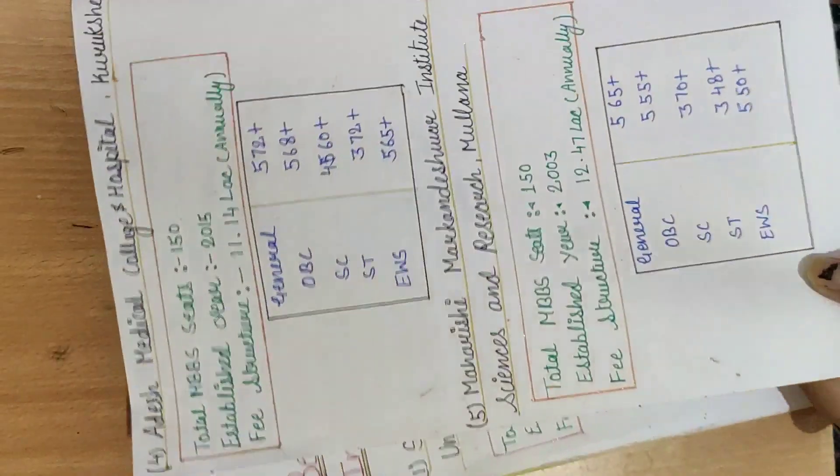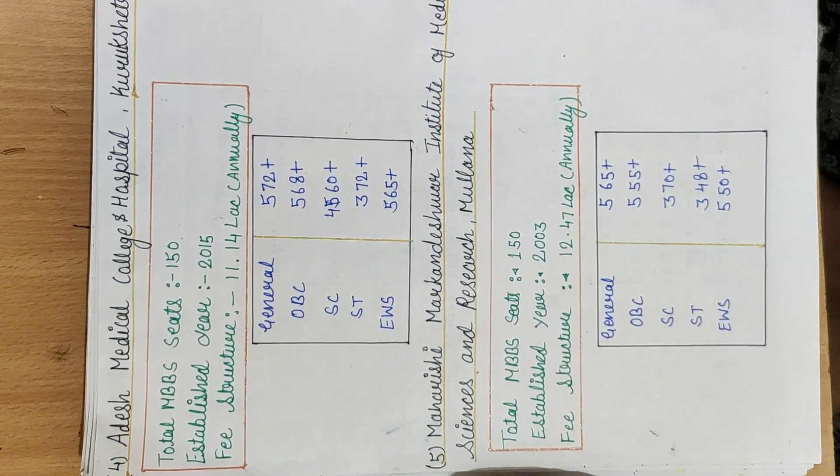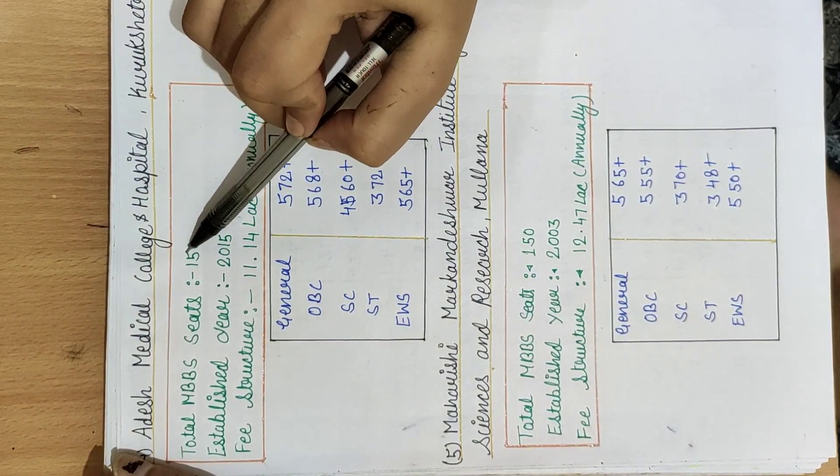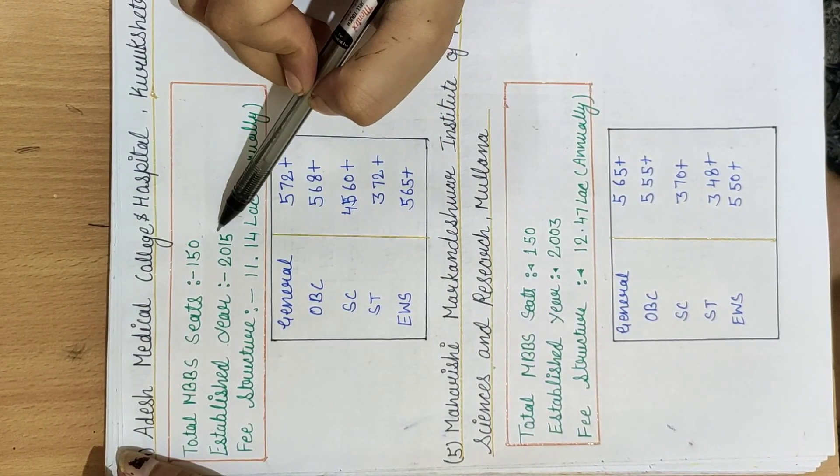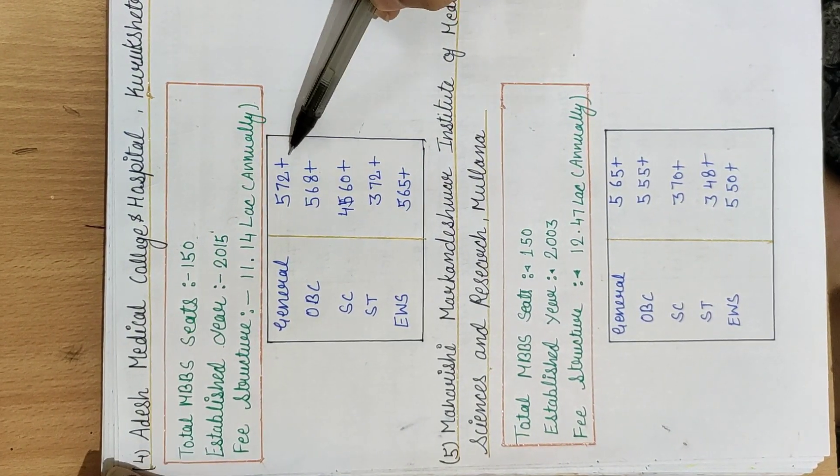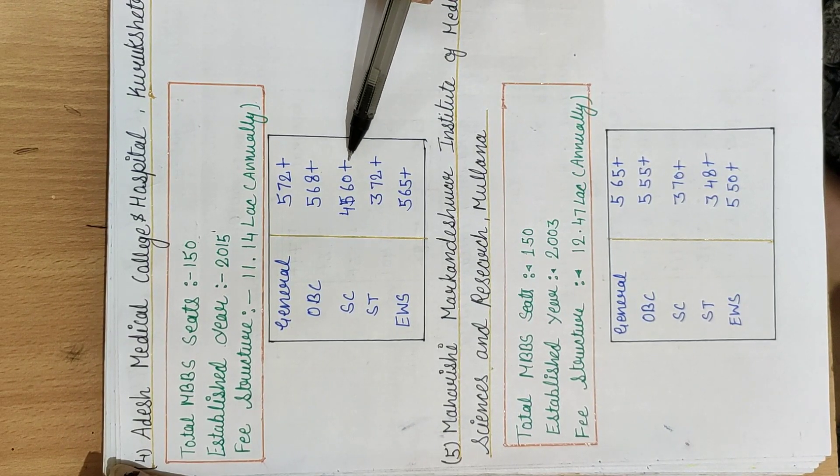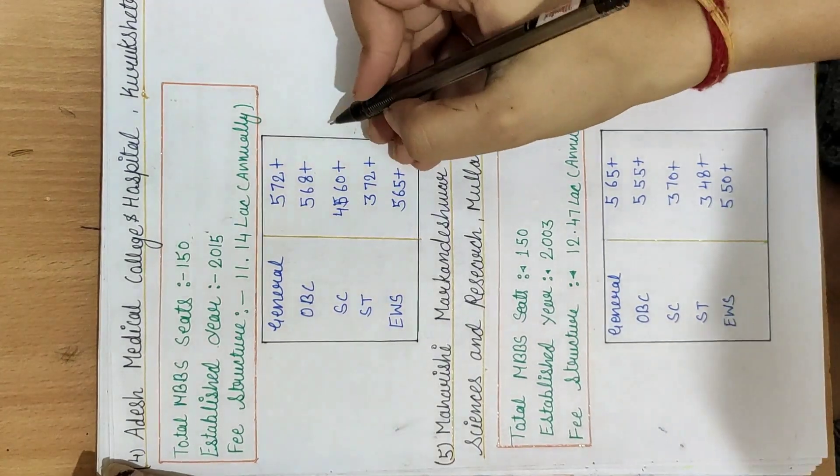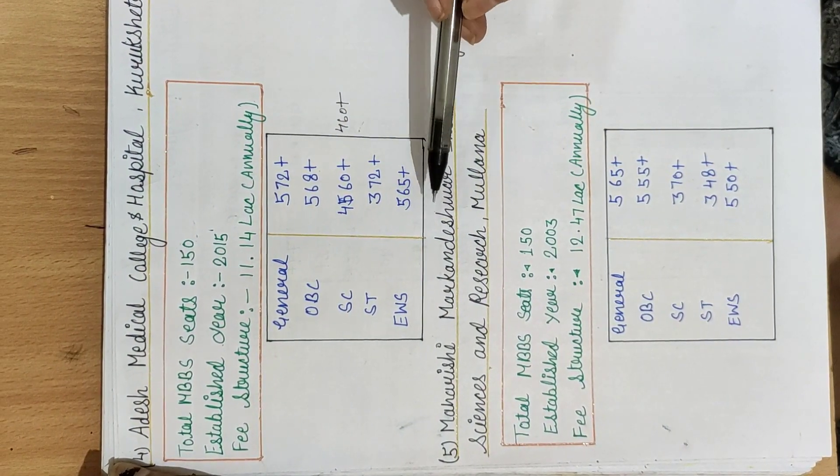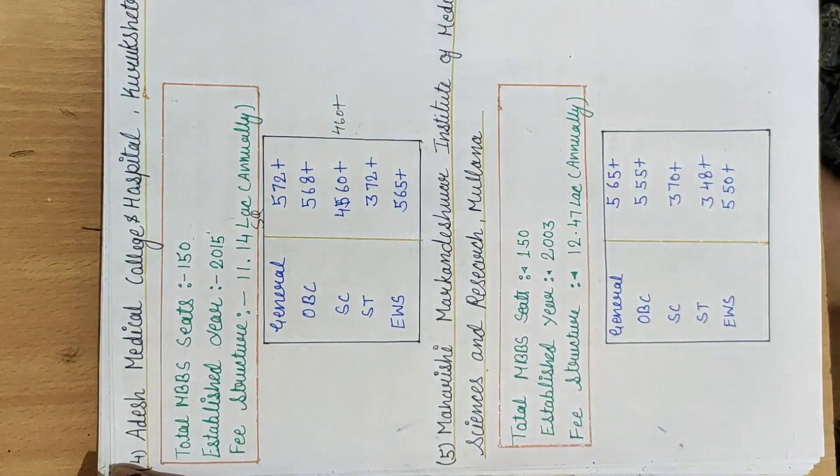Next, fourth medical college is Agrasen Medical College and Hospital, Kurukshetra. Total MBBS seats are 150, establishment year 2015. Its fee structure is 11.14 lakh annually. For general 572 plus, OBC 568 plus, SC 460 plus, ST category 372 plus, EWS 565 plus for state quota.